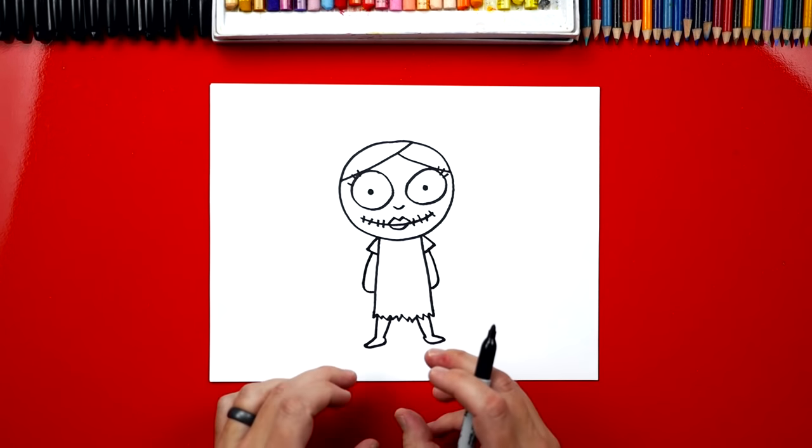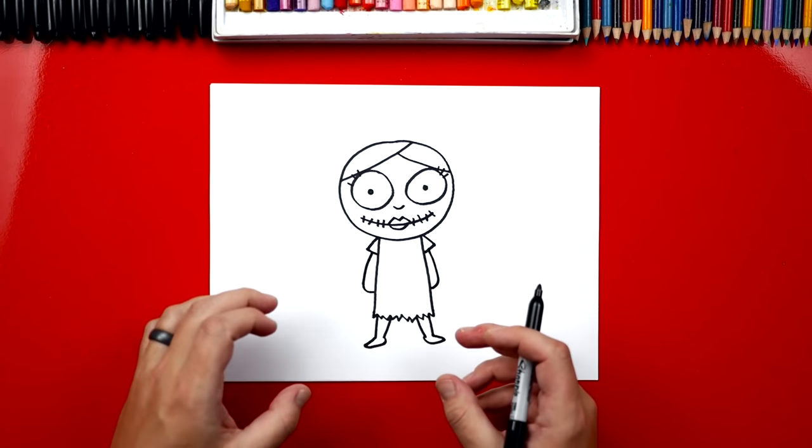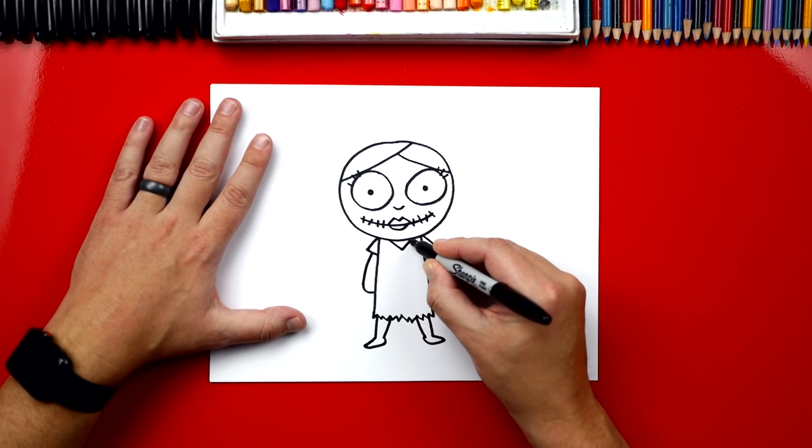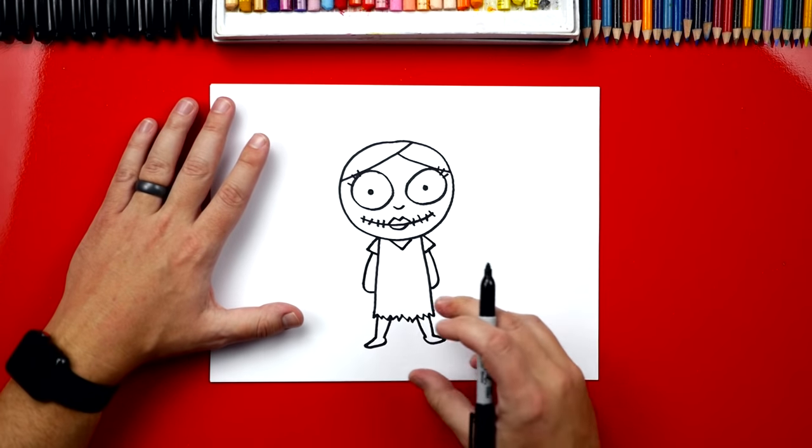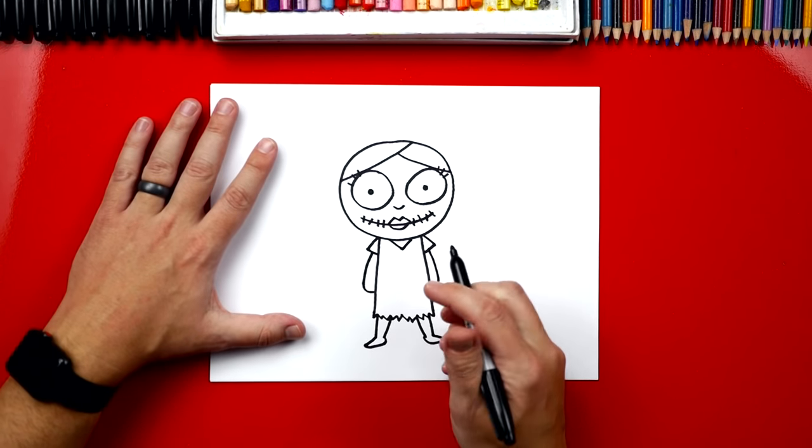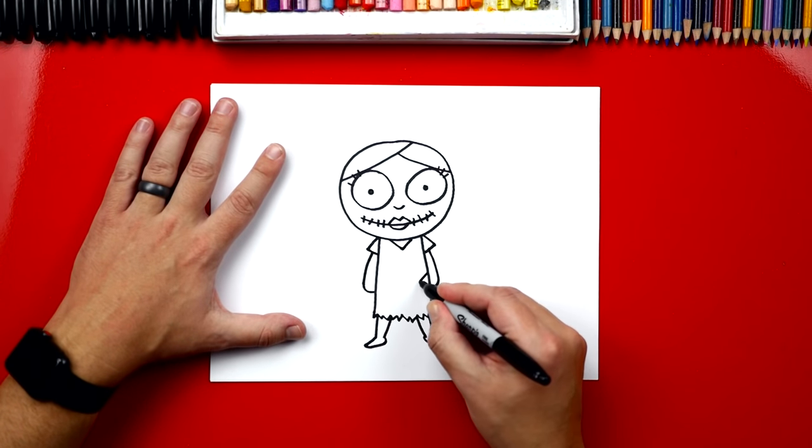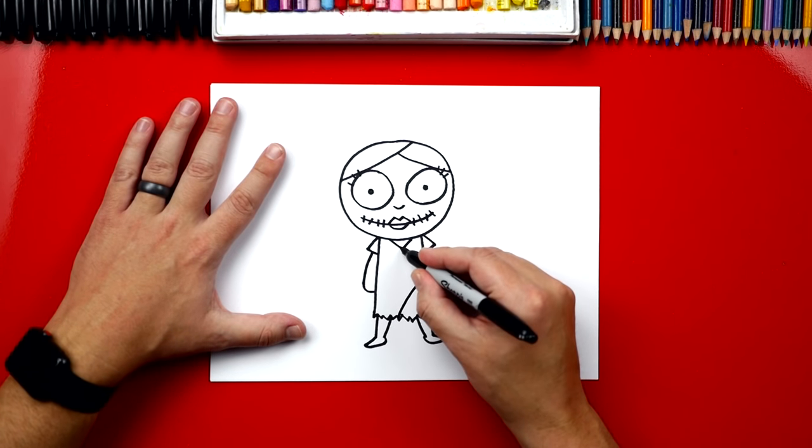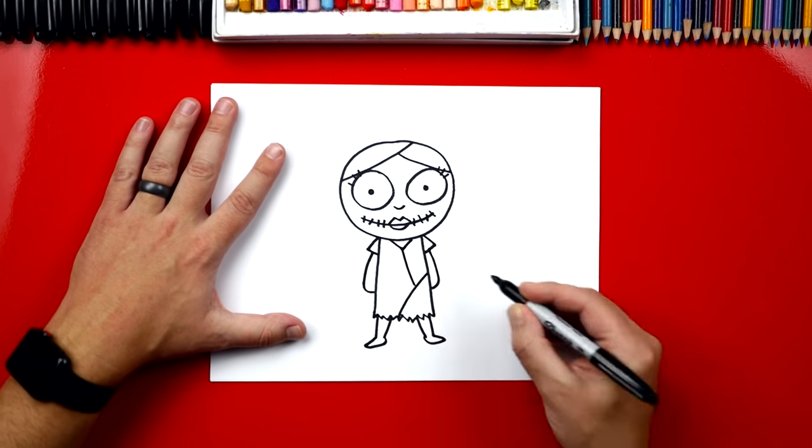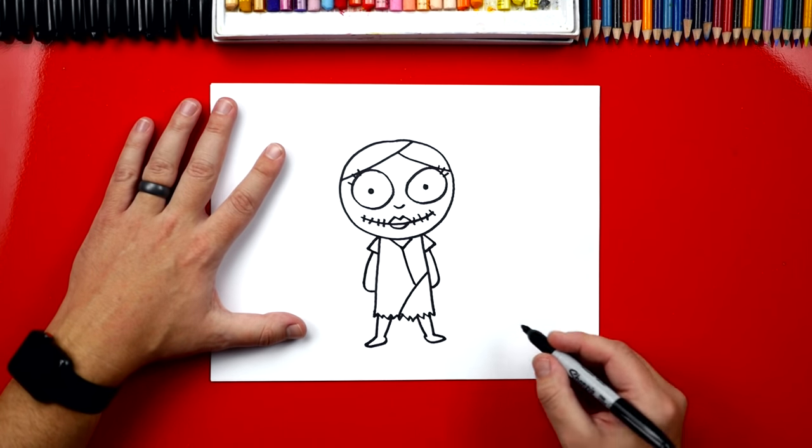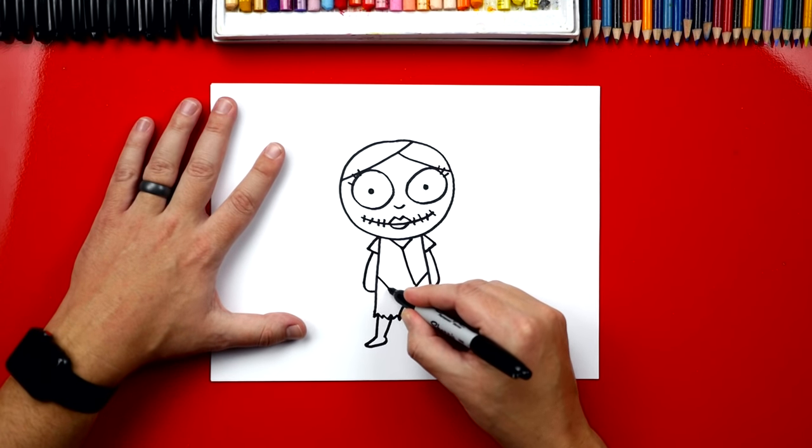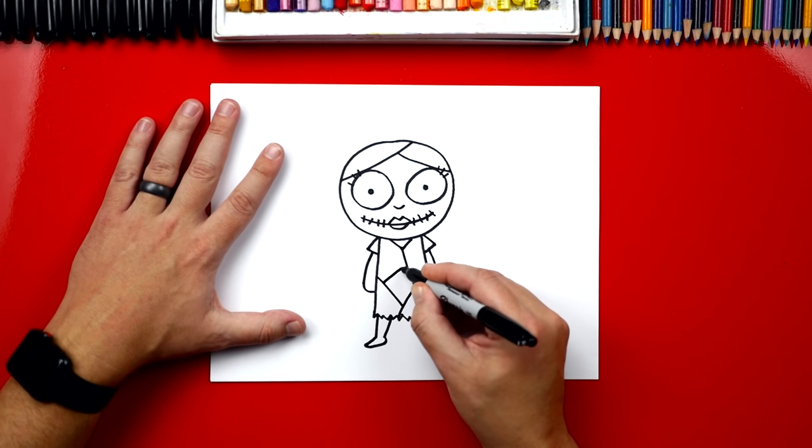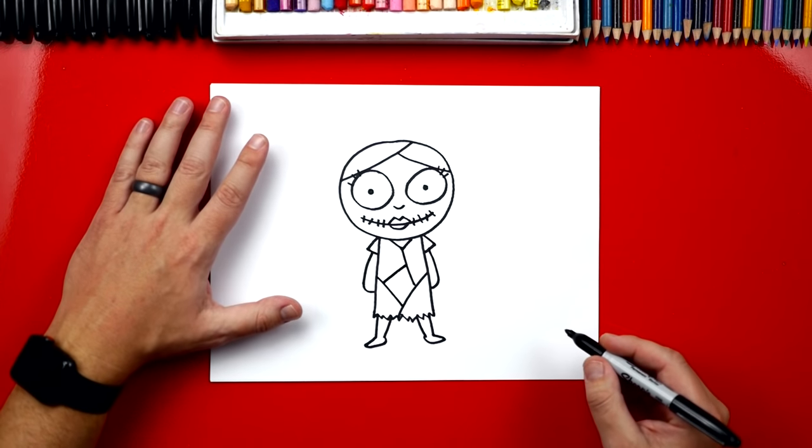Okay, now it kind of looks like her, except we need to add all of the extra details, especially on her dress. So right here at her neck let's draw a V. Her dress is made out of all these little patches. So let's draw one diagonal line coming down the side. Then we can connect her neck down to that patch. Then let's draw another diagonal line over here, and then we can also connect with a diagonal line going the other direction.